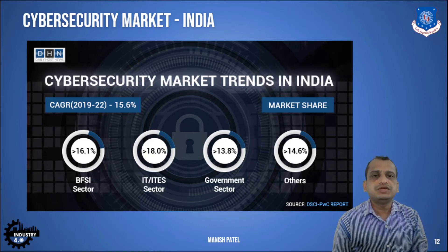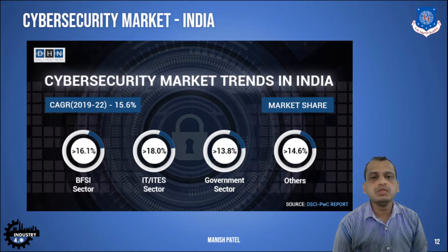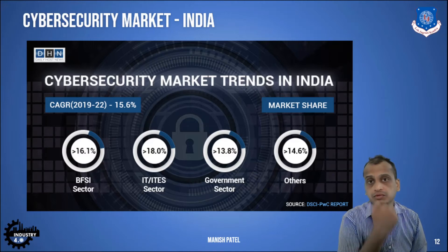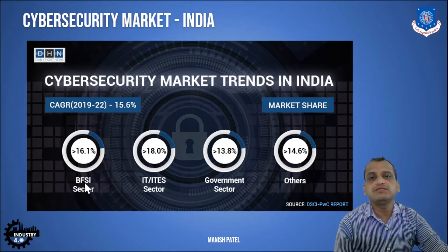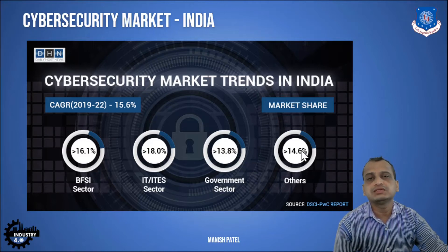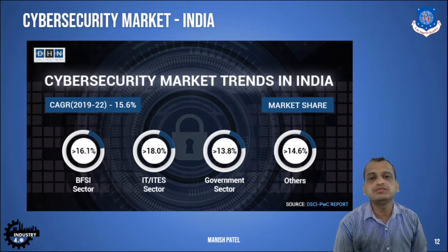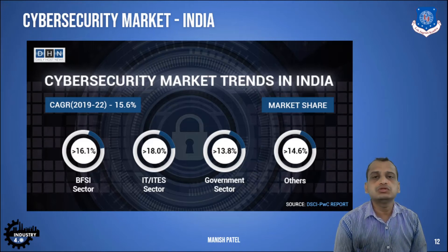Looking at the cybersecurity area, which is also a key component of Industry 4.0, the CAGR from 2019 to 2022 is 15.6 percent. The BFSI sector — banking, financial services, and insurance — shows almost 16 to 18 percent growth; IT-enabled services are almost 16 percent; the government sector is almost 13.8 percent; and retail and other sectors are almost 14.6 percent. Overall, India is developing rapidly within cybersecurity.